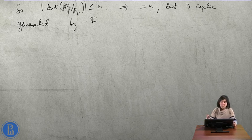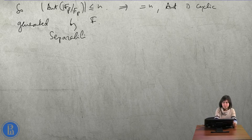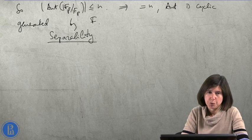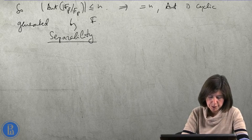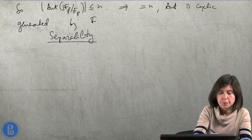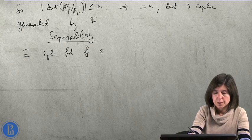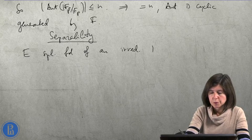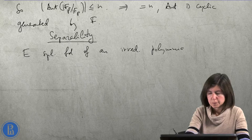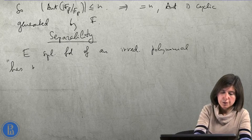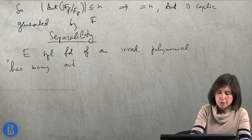Our next topic is separable extensions. We would like to say that a splitting field of an irreducible polynomial has many automorphisms. So E, a splitting field of an irreducible polynomial, we would like to say that it has many automorphisms.